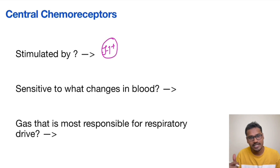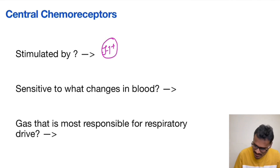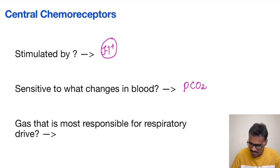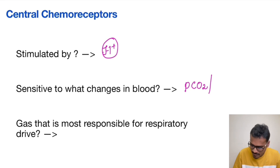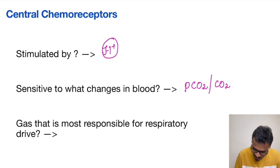To revise: the central chemoreceptors are stimulated by H+ ions — not CO2 directly. The central chemoreceptors are sensitive to PCO2 changes in the blood. Therefore, which gas is most responsible for respiratory drive? The answer is carbon dioxide, because the central chemoreceptors are more efficient in influencing respiratory rate.